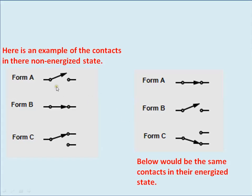This is the pictorial representation of Form A, Form B, and Form C contact devices. Form A is normally open, Form B is normally closed, and Form C has one NC and one NO. In the energized state, the Form A contact becomes NC, Form B becomes NO, and the Form C contacts change over from NO to NC and NC to NO.